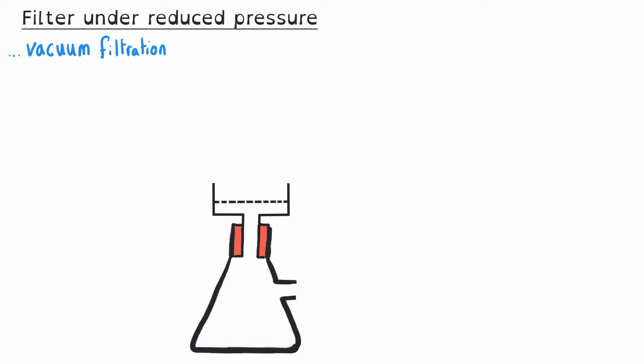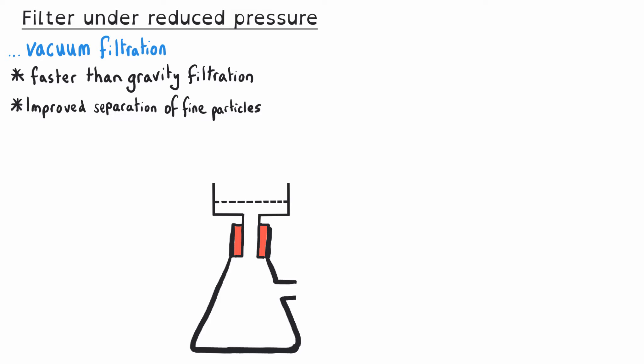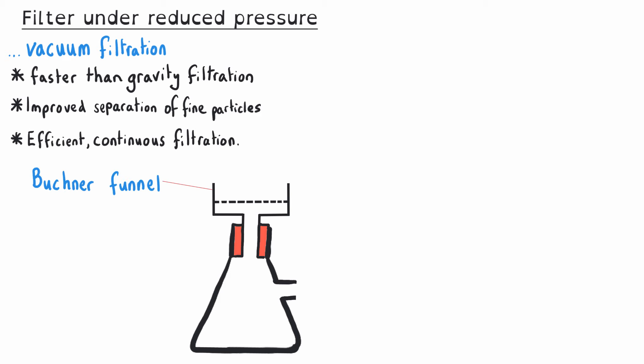It's very common as part of an organic synthesis to carry out filtration under reduced pressure, sometimes referred to as vacuum filtration. We do this because it's much faster than gravity filtration, allows improved separation of fine particles, and is more efficient with continuous filtration while connected to a vacuum. When drawing a diagram of vacuum filtration, always draw a two-dimensional cross section. The essential ingredients are the Buchner funnel sitting inside a special conical flask with a bung around the stem to ensure no air gaps, connected through its side arm to a vacuum pump, with a piece of filter paper inside the Buchner funnel.